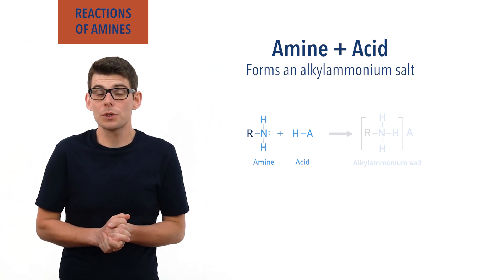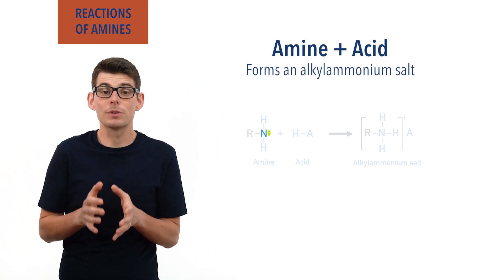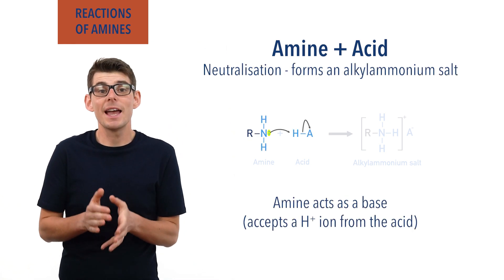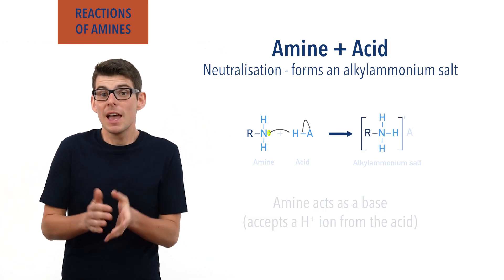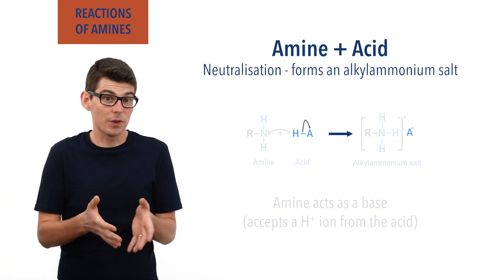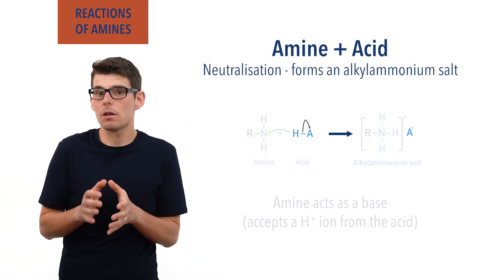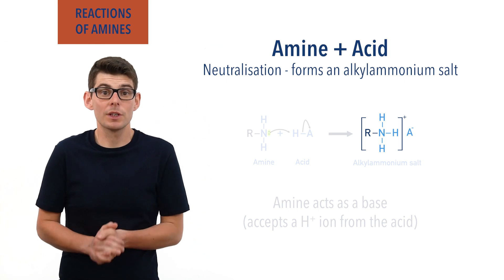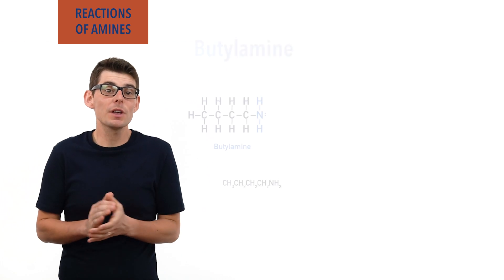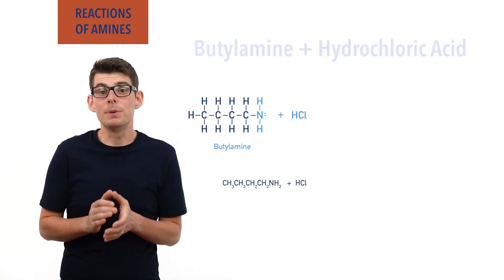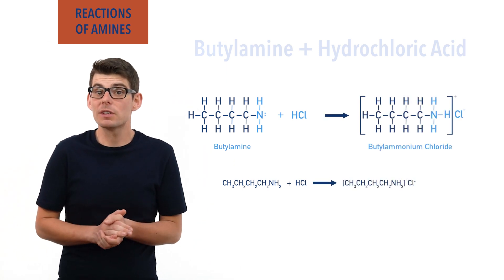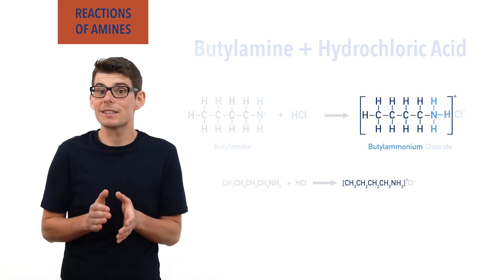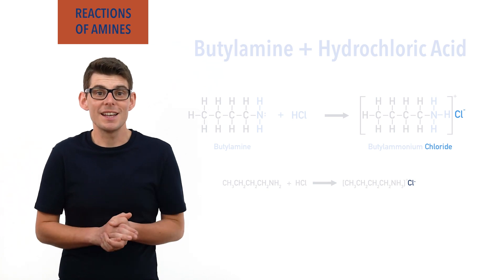As we've just seen with the reaction of an amine with water, the nitrogen with that lone pair of electrons enables an amine to act as a base. When reacted with an acid, an amine accepts a H+ ion from the acid and ends up becoming a positively charged alkyl ammonium ion. As the acid reacts, a negatively charged ion gets released — the conjugate base ion of the acid. The positively charged alkyl ammonium ion and negatively charged conjugate base ion will be attracted to each other, and if the water is removed from the solution, it will form an alkyl ammonium salt. For example, if butyl amine and hydrochloric acid react together, the salt butyl ammonium chloride is produced, made up of a positively charged butyl ammonium ion and a negatively charged chloride ion.